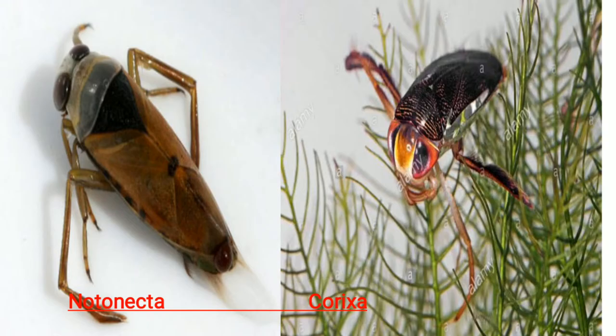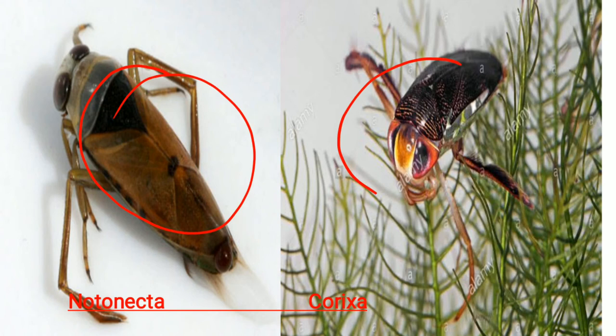To illustrate how niche differs from habitat, consider two bugs shown on screen: Notonecta (the back swimmer) and Corixa (the water boatman). These are two aquatic bugs found in the same habitat — a pond choked with small vegetation.